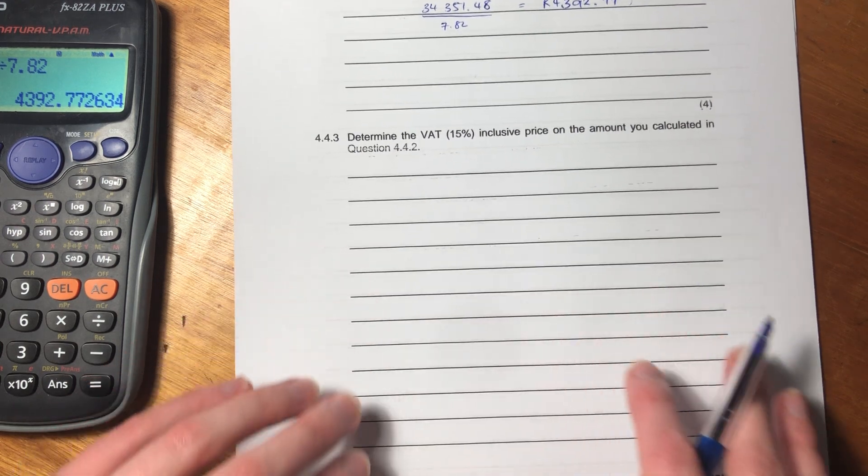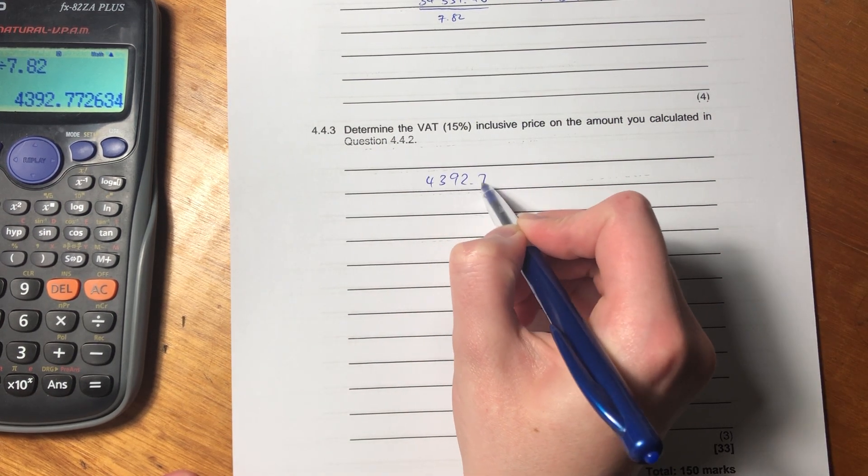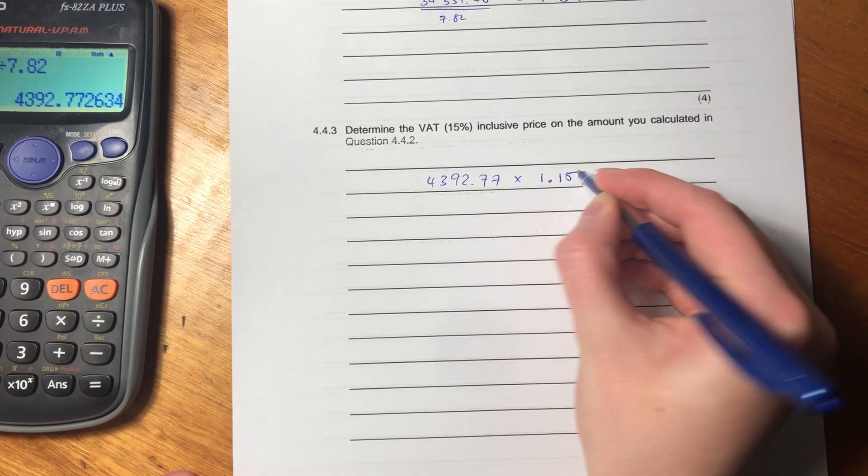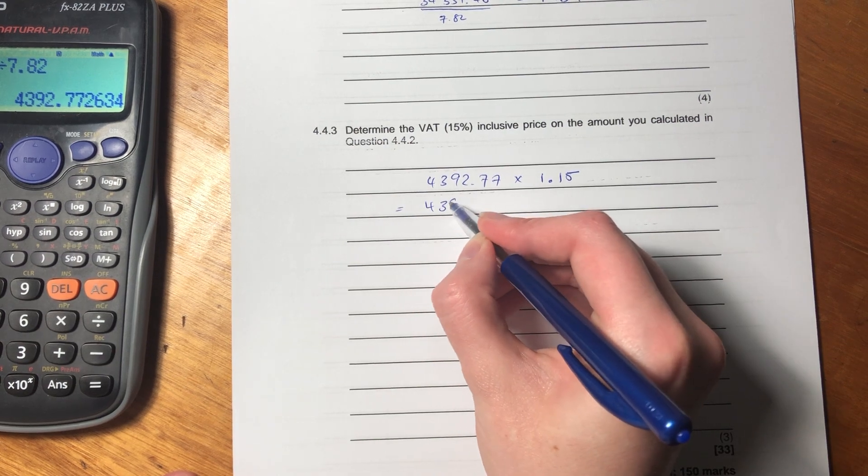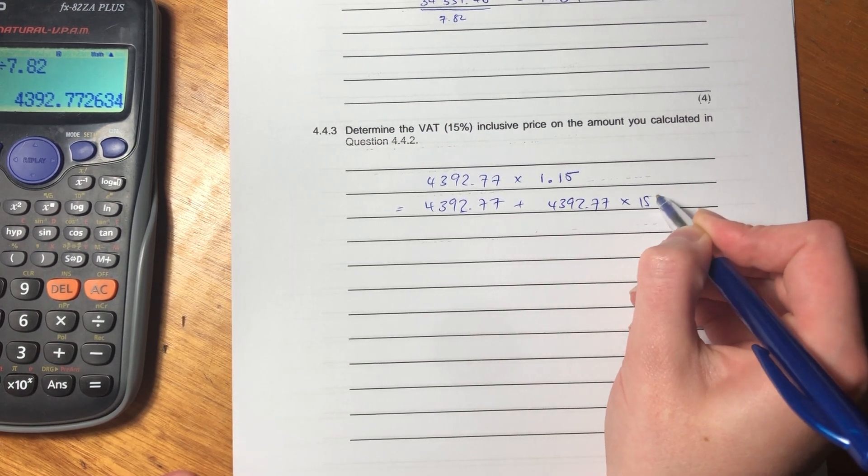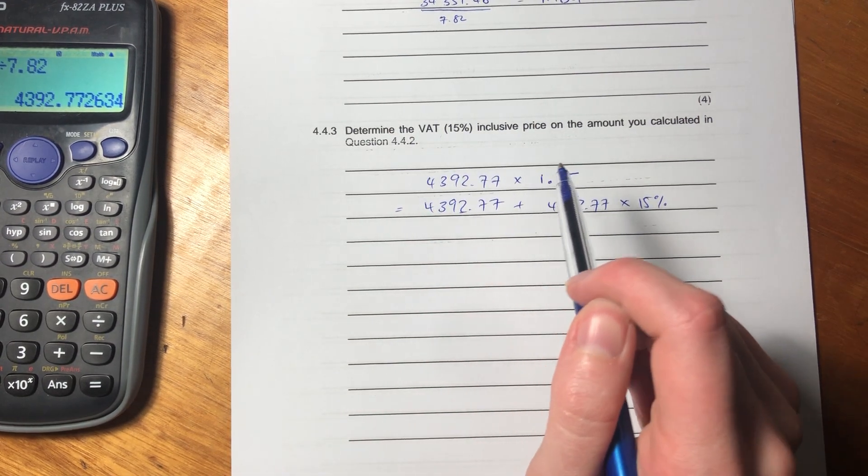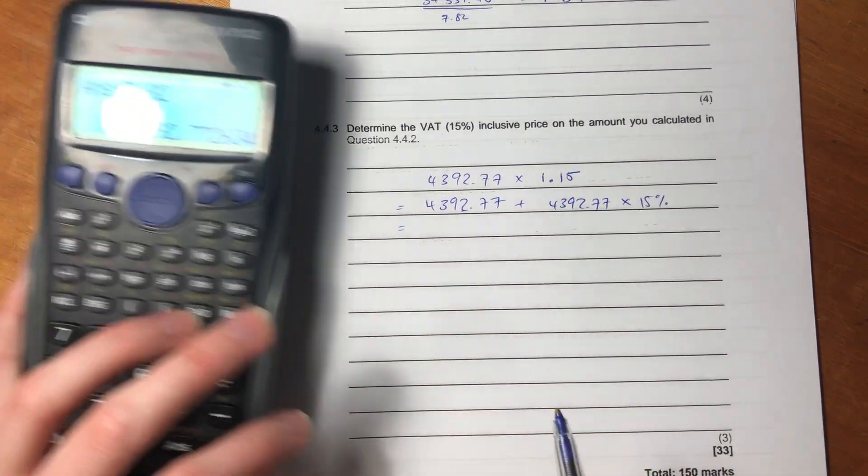Let's now go on to the next one. This is the last question of the entire paper. So it says, determine the VAT inclusive price on the amount you calculated in 4.4.2. So it's basically saying, I know that you have this amount in 4.4.2, but I want you to add VAT to it. Now, what do we do when we add VAT? We say 1.15. Now, some students prefer doing this where they say 4392.77 plus 4392.77 times by 15%. Remember, that's 15%. They've given it to you there, but you should also know that. So these two things are exactly the same thing. They'll give you the same answer. I'm just writing in a different way. Put that into your calculator.